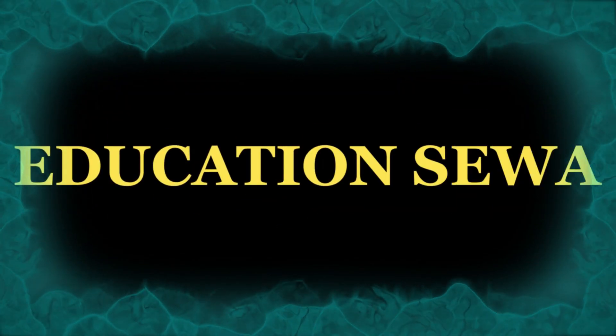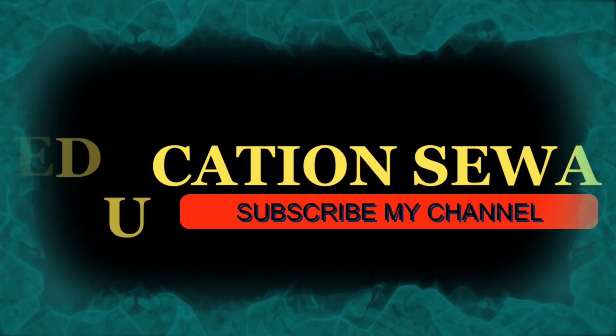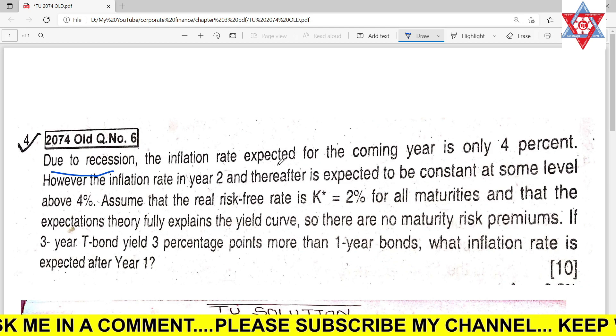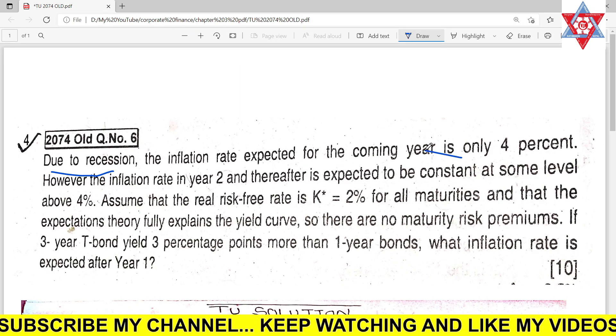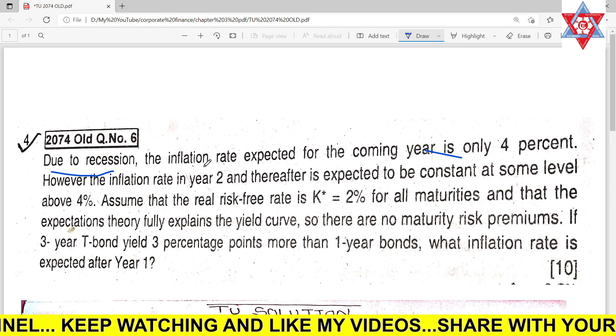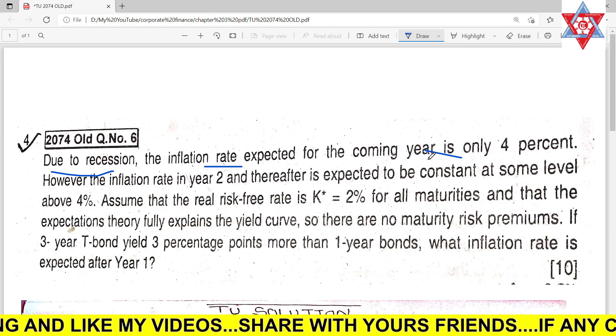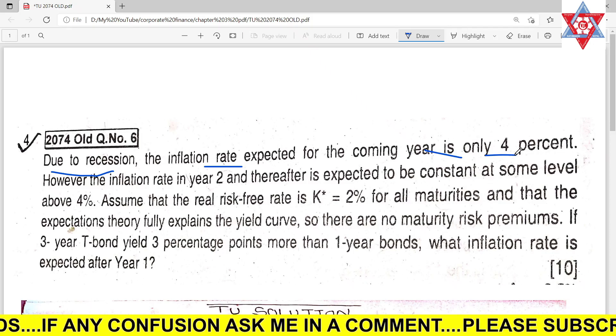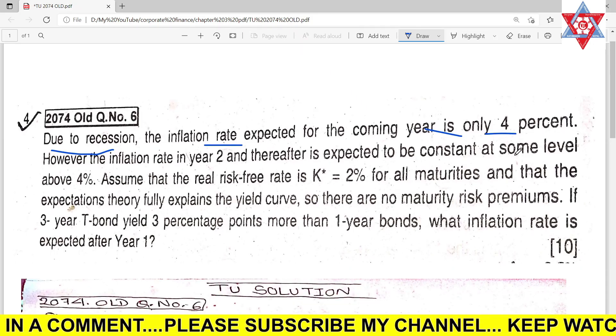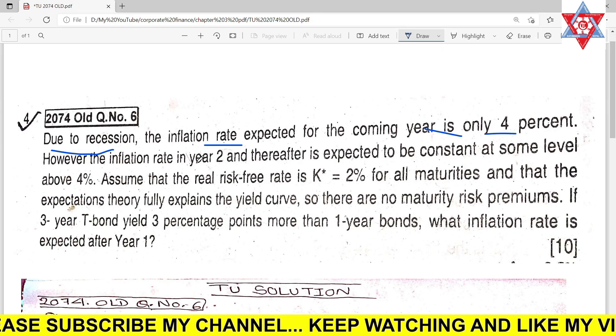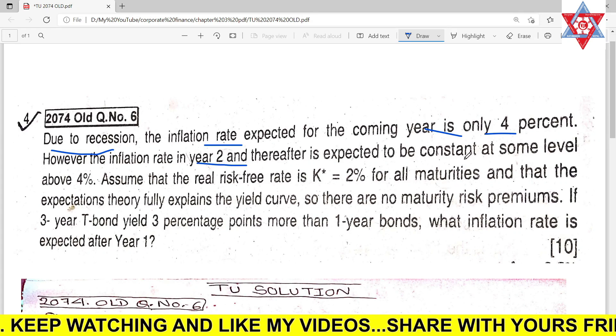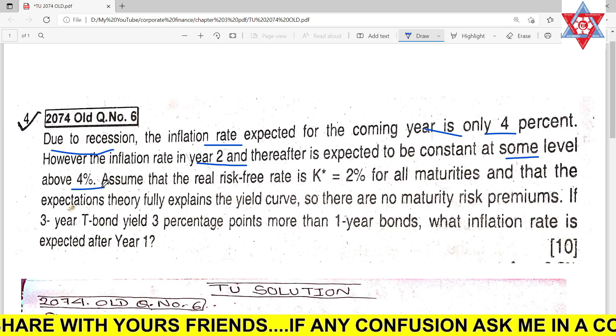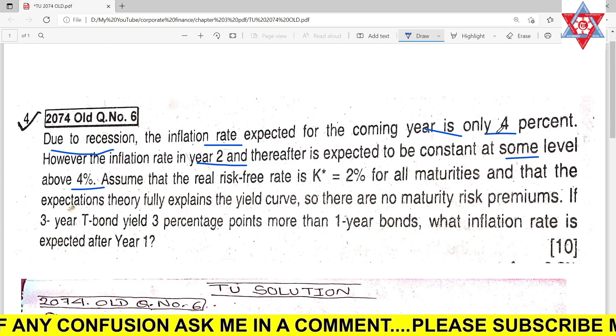So, due to recession, the inflation rate expected for the coming year is only 4%. However, the inflation rate in year two and thereafter is expected to be constant at some level above 4%.